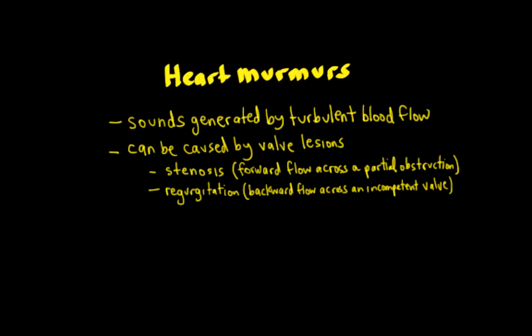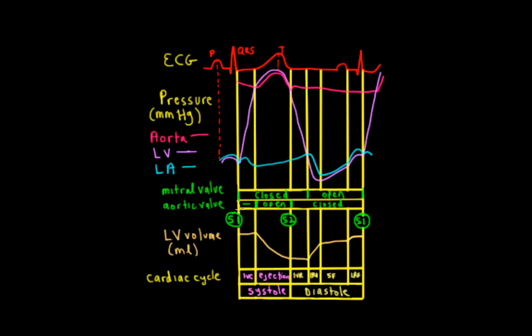There are other types of murmurs that we'll discuss in another video. Here's the Wiggers diagram, which is critical to understanding the timing. We have S1, the onset of systole, which is made up of IVC and ejection. Then we have S2, which is the closure of the semilunar valves and the onset of diastole. We first have IVR, and then we have our three components of filling.